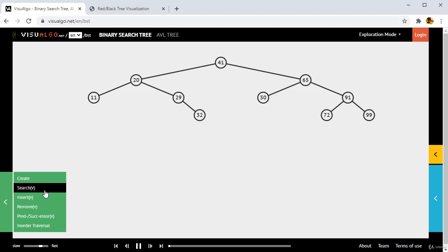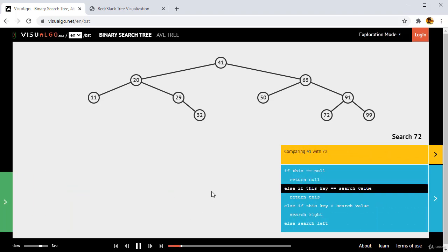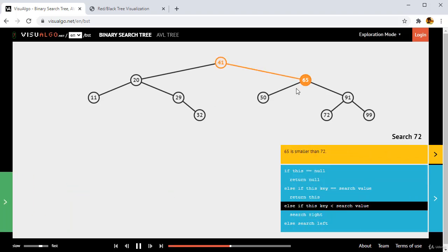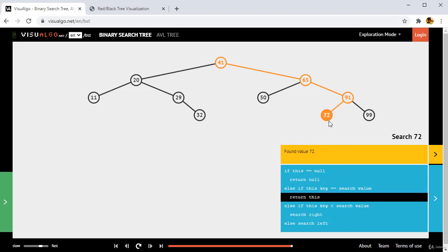And here if I need to perform anything like search, maybe I need to perform search for 72. If I go, it is going to represent how things are going to follow. That's it, that's how we are going to reach 72.